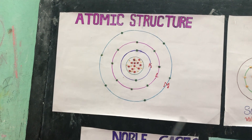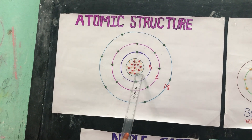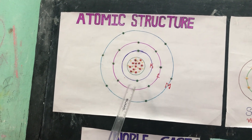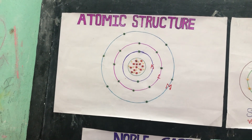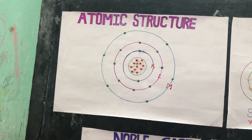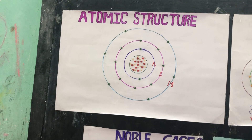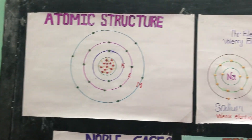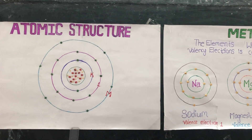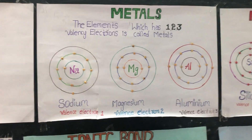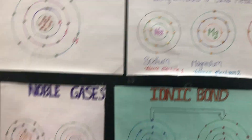Protons are positively charged and electrons are negatively charged. Neutrons are neutrally charged. These are classified into metals, non-metals, and noble gases.